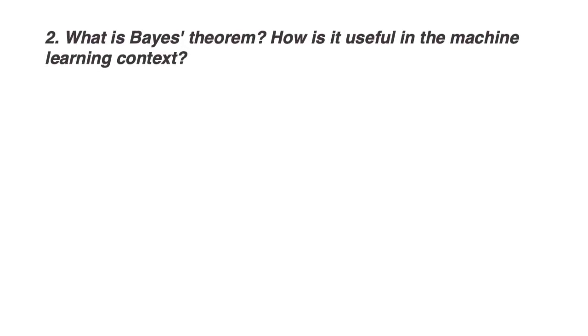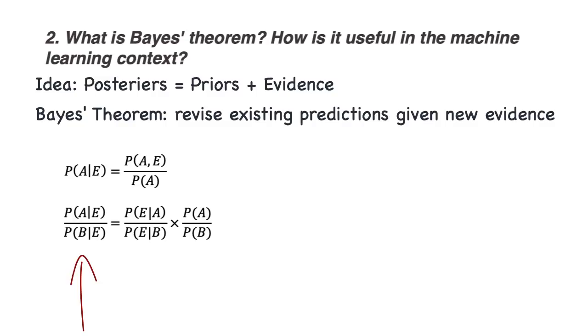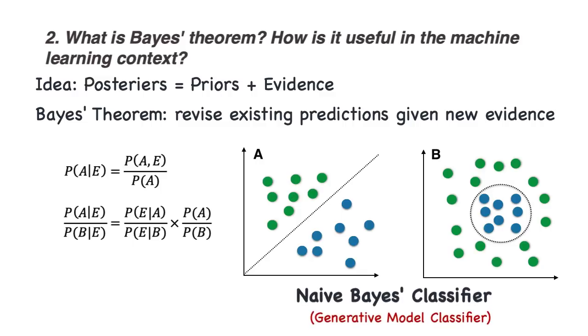What is Bayes' theorem, and how is it useful in the machine learning context? Bayes' theorem allows us to determine posterior probabilities from our priors, when presented with evidence. Or more simply, a method of revising existing predictions given new evidence. So how much more likely a is than b now is equal to how much more likely a was than b before we saw our new evidence, times how much more likely this evidence would be to occur if a were true than if b were true. In machine learning, Bayes' theorem forms the fundamental assumption of the naive Bayes' classifier, a generative model for classification.